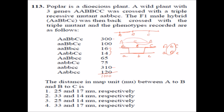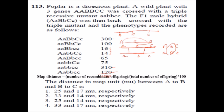The formula for map distance is: map distance = (number of recombinant offspring / total number of offspring) × 100. If there is a double crossover, it means recombination occurred between both a-b and b-c, so the double crossover progeny must be included as recombinants when calculating the distance for either interval.